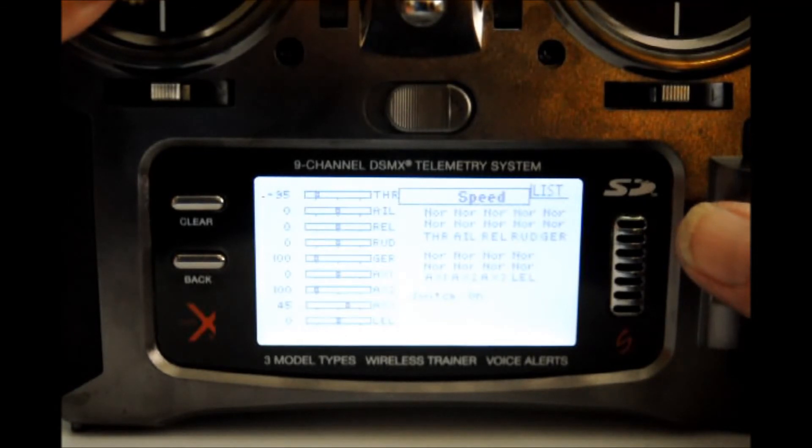You may now go to the servo that you wish to control. In this case, auxiliary channel one. Notice there are two positions at each servo. This is for the up and down position or left and right position.